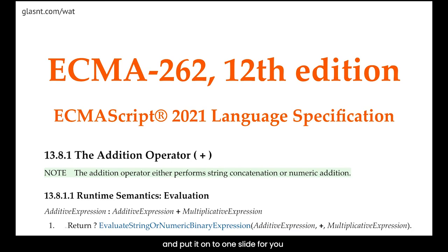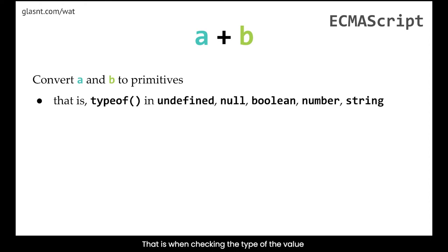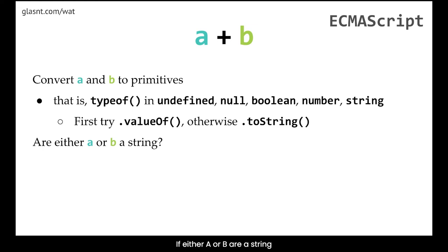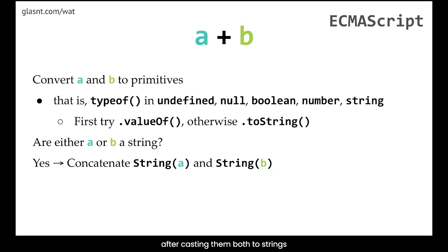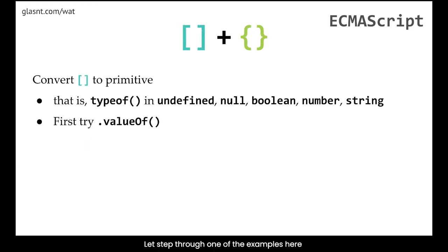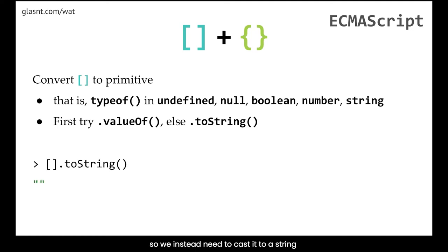How JavaScript works out whether to perform concatenation or numeric addition is complicated. The standard defines exactly what should happen. Consider A and B: first convert both A and B to primitives — that is, one of either undefined, null, boolean, number, or string. To do this, first try the value of, otherwise cast it to a string with the toString function. If either A or B are a string, then concatenate the two together after casting them both to strings; otherwise add them together after casting them both to a number.